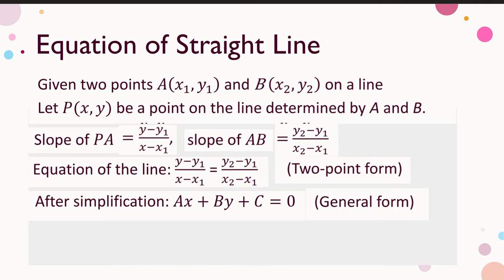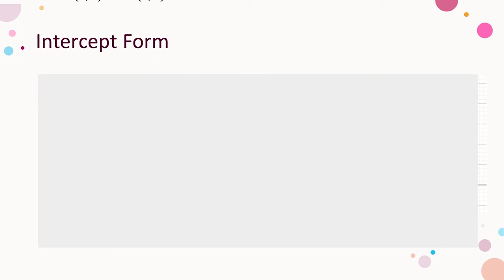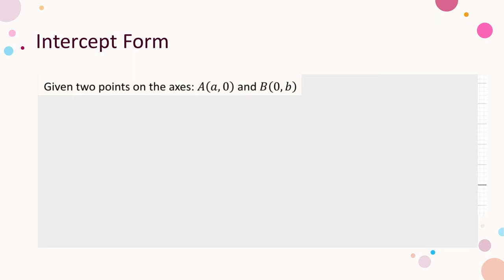So the two-point form is a way of getting the equation of a straight line when two points on the line are given, and the general form is the way of presenting the equation in a neat way. Let us consider two special points of the line lying on the two axes. Let the point on the x-axis be (a, 0) and on the y-axis be (0, b). That is, the x-intercept is a and the y-intercept is b. Note that the intercepts are numbers, not ordered pairs.